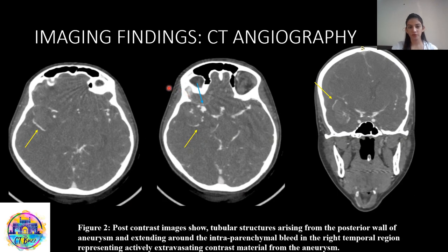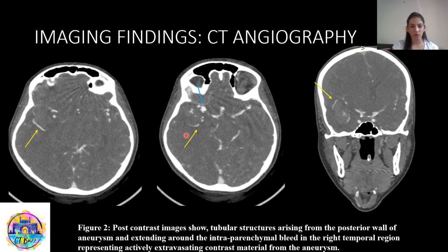On post contrast study, we can see an outpouching from the M1 segment of the right MCA artery which was suggestive of aneurysm. But in these images, we can see apart from the vessels, there is another tubular structure shown in yellow arrows which was seen posterior to the hematoma.